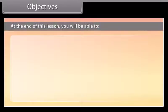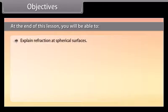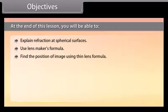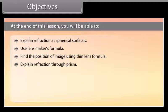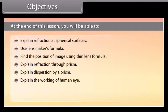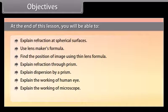Objectives. At the end of this lesson, you will be able to: explain refraction at spherical surfaces; use lens maker's formula; find the position of image using thin lens formula; explain refraction through a prism; explain dispersion by a prism; explain the working of human eye; explain the working of microscope; explain the working of telescope.